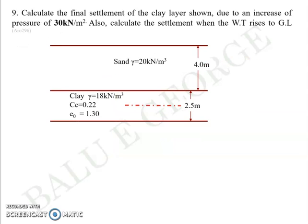Next question is that of a consolidation settlement. You are given a layer of sand, 4 meters thickness, with unit weight 20 kN per meter cube, below which there is a clay layer. The clay layer is 2.5 meters thick with properties: unit weight 18, compression index 0.22, initial void ratio 1.30. You are asked to calculate the final settlement of the clay layer due to an increase of pressure of 30 kilopascals. Also, as a second part of the question, you are asked to do the same calculation when the water table rises to the ground level.